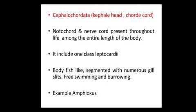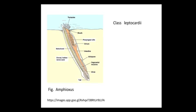Next is Cephalochordata. 'Cephalic' means head, 'corde' means cord. The nerve cord and notochord are present throughout the life along the entire length of the body. It includes only one class, Leptocardii. The body is fish-like and segmented, with numerous gill slits, and the organism is free-swimming and burrowing. The example is Amphioxus — we can see tentacles, pharyngeal gill slits, nerve cord, and notochord in the diagram.